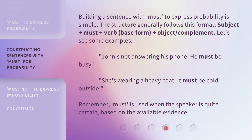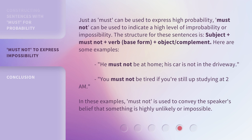Let's see some examples. Just as 'must' can be used to express high probability, 'must not' can be used to indicate a high level of improbability or impossibility. The structure for these sentences is: Subject + must not + verb (base form) + object/complement. Here are some examples: 'He must not be at home — his car is not in the driveway.' 'You must not be tired if you're still up studying at 2 a.m.' In these examples, 'must not' is used to convey the speaker's belief that something is highly unlikely or impossible.